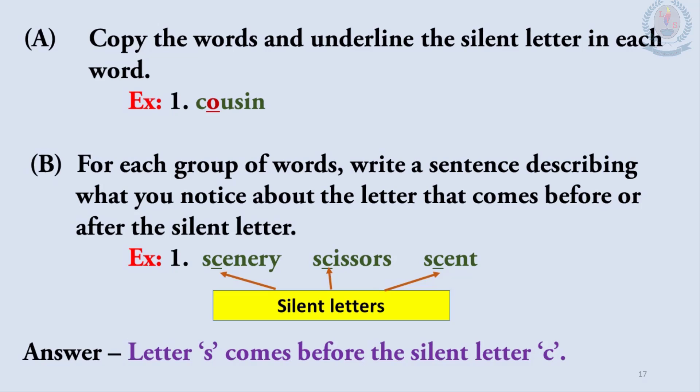Part A: Copy the words and underline the silent letter in each word. For example, the first word is 'cousin' — the silent letter is O. Part B: For each group of words, write a sentence describing what you notice about the letter that comes before or after the silent letter. Look at these three words: 'scenery,' 'scissors,' 'scent.' You can see the letter S comes before the silent C in each word. So the answer is: letter S comes before the silent letter C.